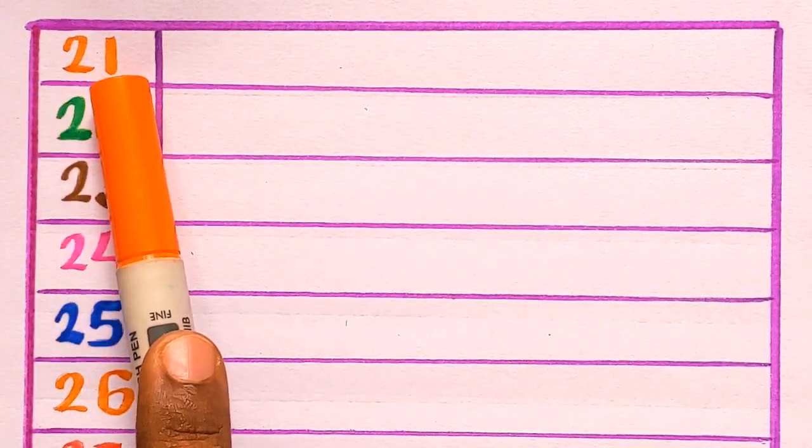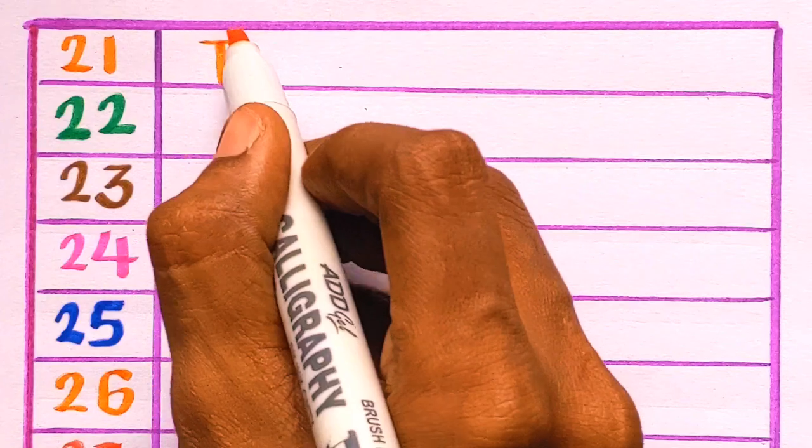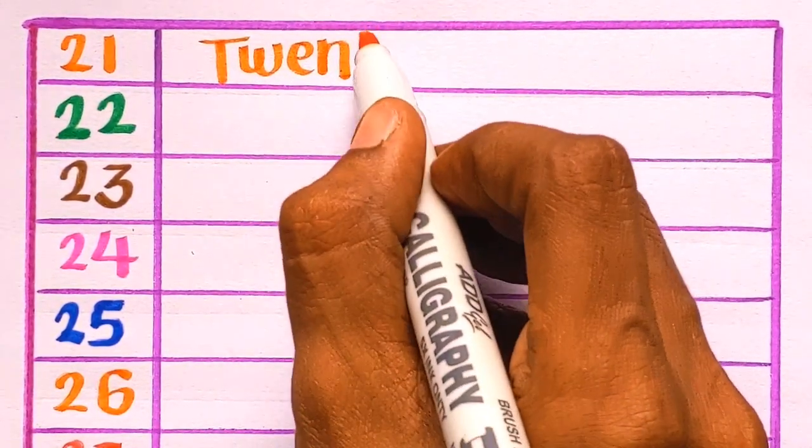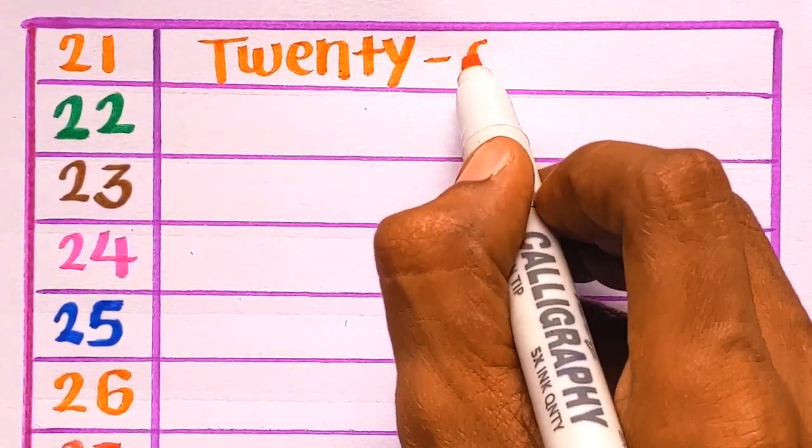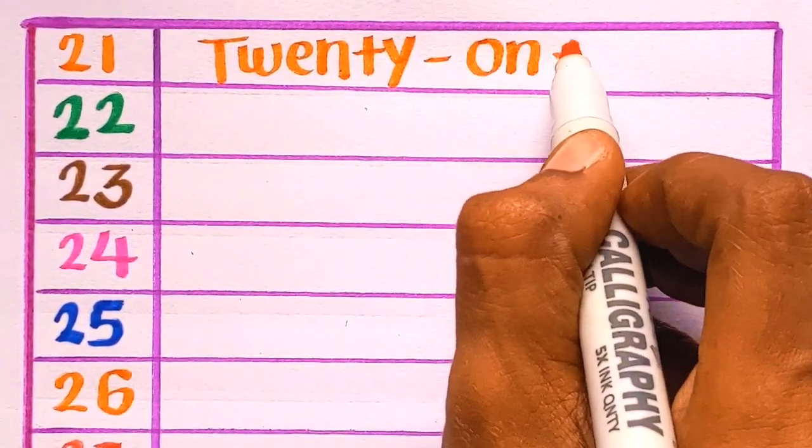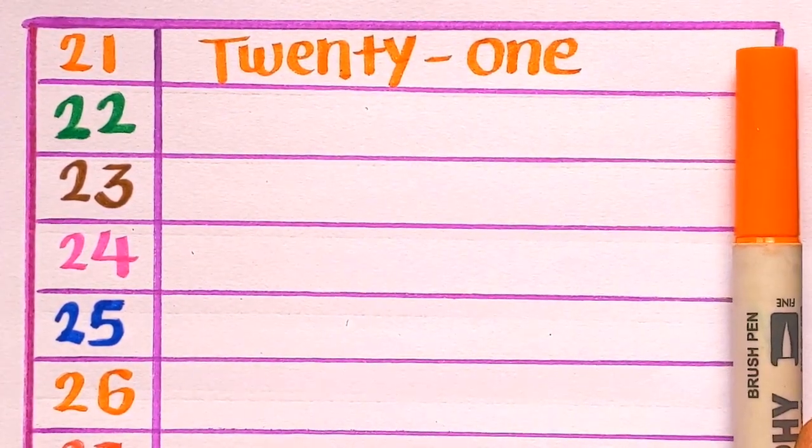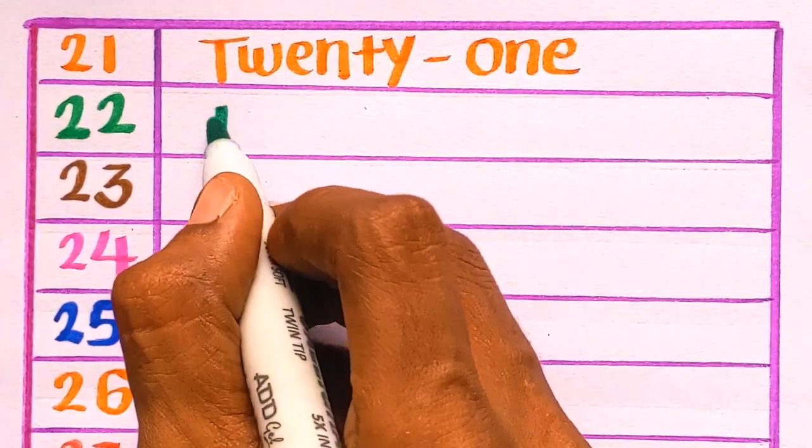2-1-21. T-W-E-N-T-Y. O-N-E-21. Orange color. Next is 2-2-22.